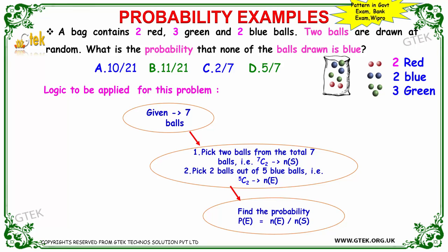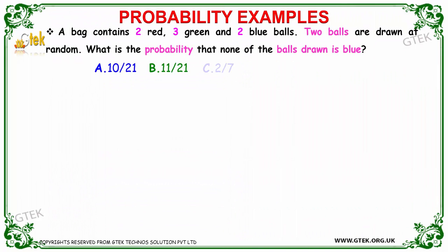The given number of balls is seven, and we are going to pick two balls. Two balls from the total seven balls, so there should be a combination of two balls. I'm trying to pick two balls out of five non-blue balls, so it's 5C2. This is the possibility, so I need to find the probability for this.